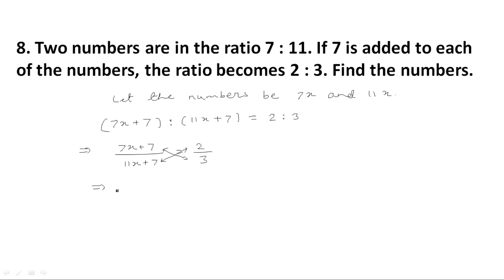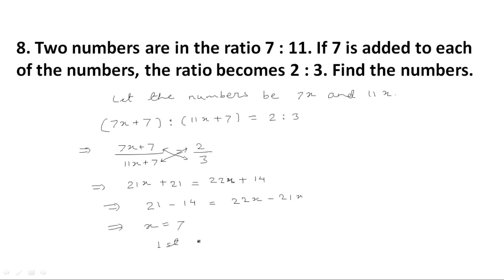Here we do cross multiplication. This implies 7x multiplied by 3 is equal to 21x, and 7 multiplied by 3 gives 21, equal to 11x multiplied by 2, which is 22x, plus 7 multiplied by 2, which is 14. This implies 21 minus 14 is equal to 22x minus 21x, so x is equal to 7. The first number is 7x, equal to 7 multiplied by 7, which is 49. The second number is 11x, equal to 11 multiplied by 7, which is 77.